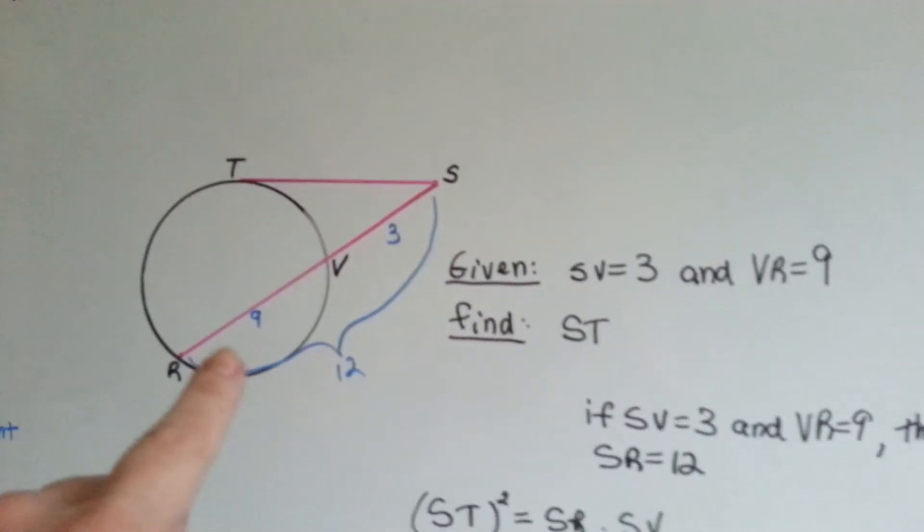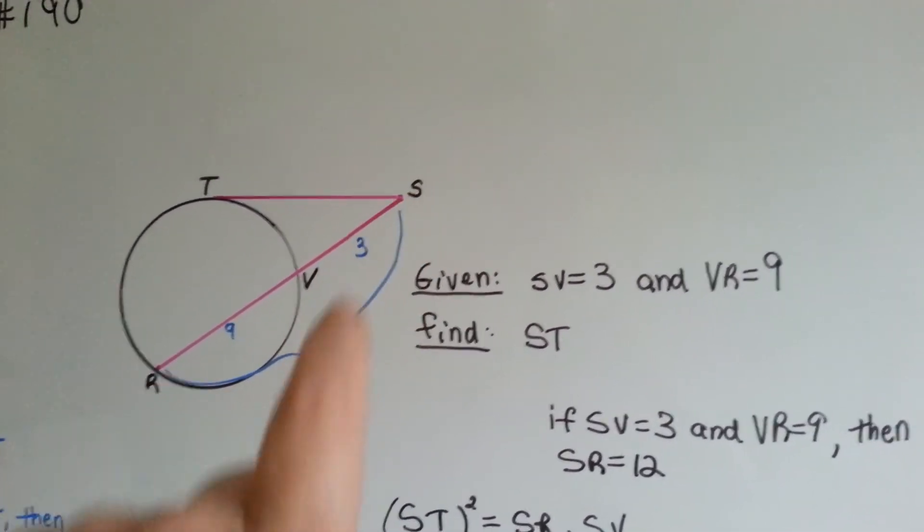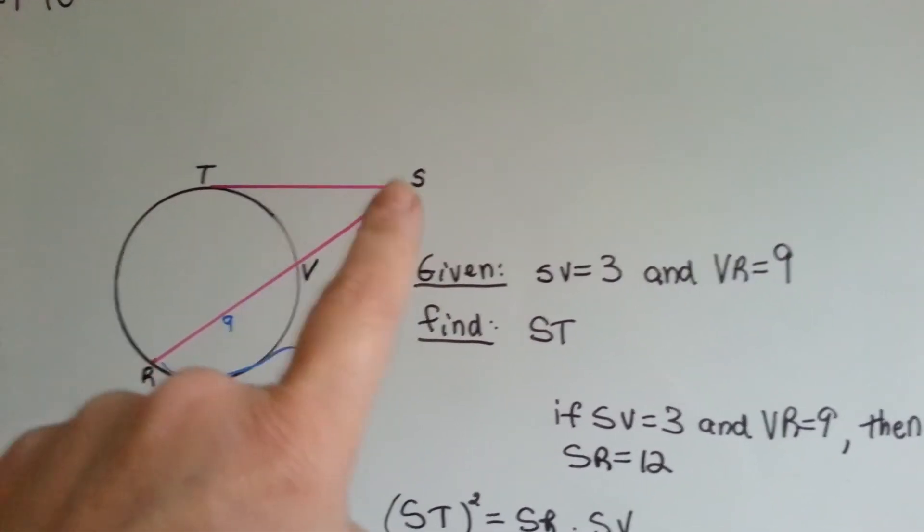Now, it's given that sv, this little piece here, is 3, and vr is 9, and they want us to find st.